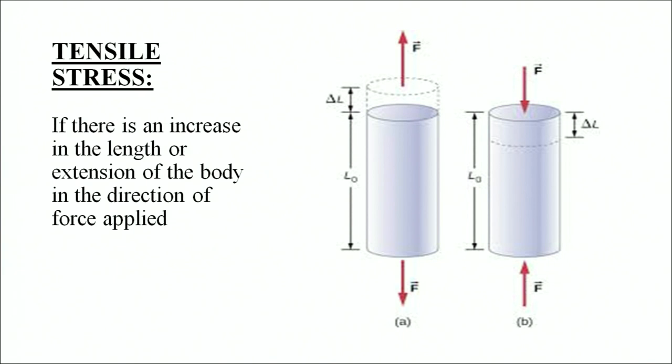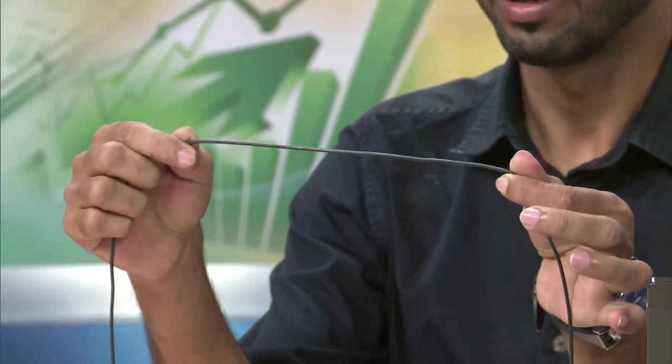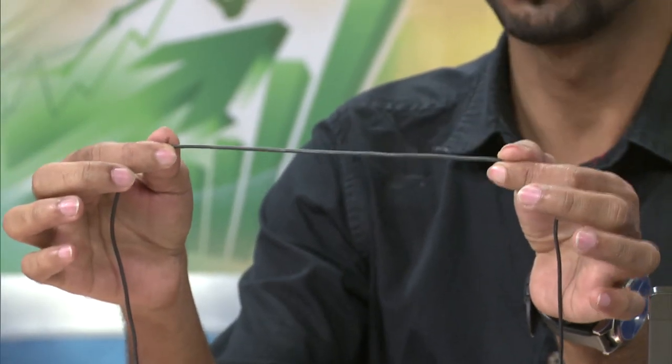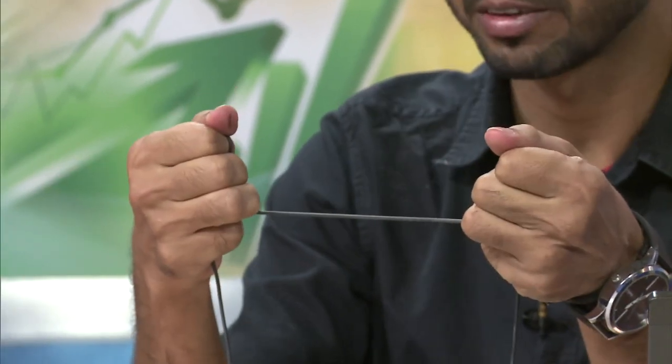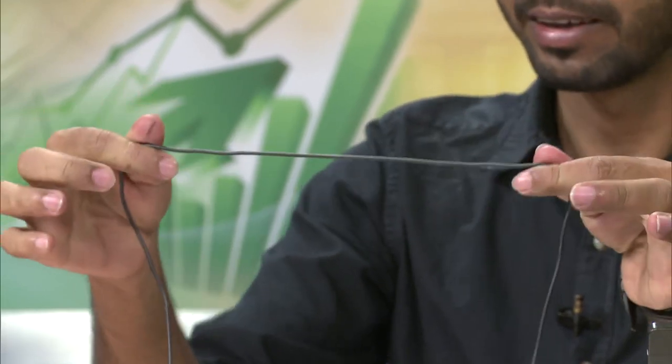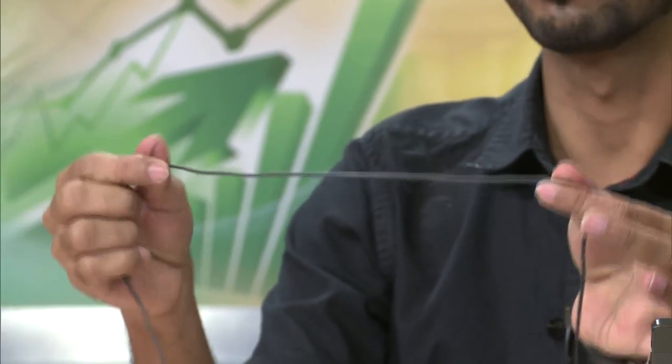Under normal stress, there are three further subtypes. The first is tensile stress. Tensile stress occurs when there is an increase in the length or extension of the body in the direction of force applied. As demonstrated with this wire, if we stretch it outward by applying an external force, it gets stretched, and the applied force is normal to the surface of the wire.